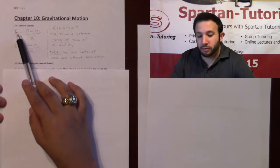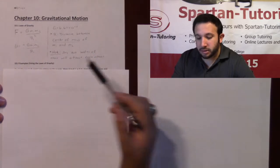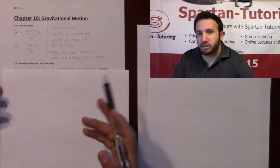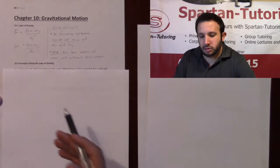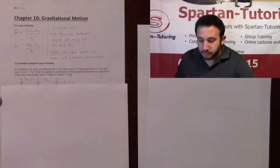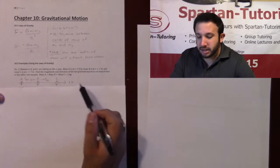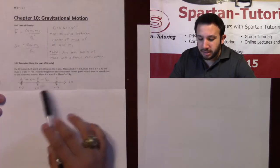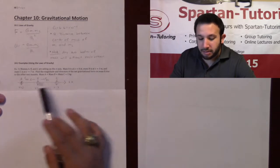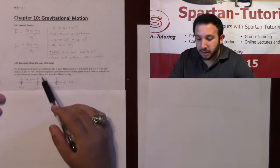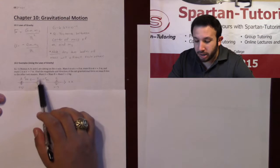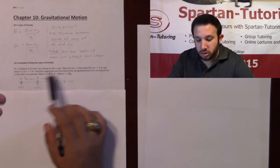This energy is just the integral of your force with respect to r. Now any two bodies will always attract each other. So let's start off with an easy example to introduce how to utilize that first equation. In this first example, masses a, b, and c are sitting on the x-axis. Mass a is at x equals 0, mass b is at x equals 3, and mass c is at x equals 7. Find the magnitude and direction of the net gravitational force on mass b — doing a free body diagram on mass b due to the other two masses.